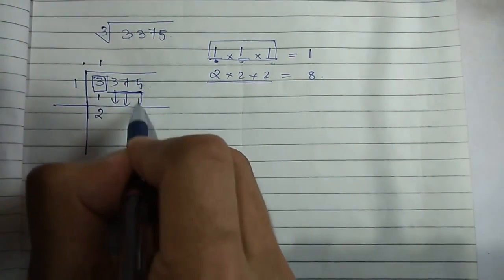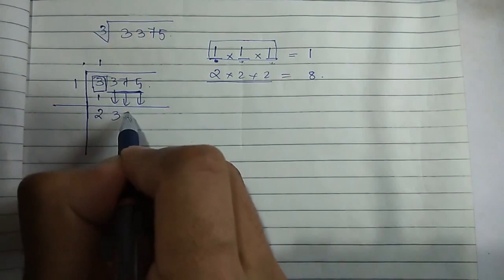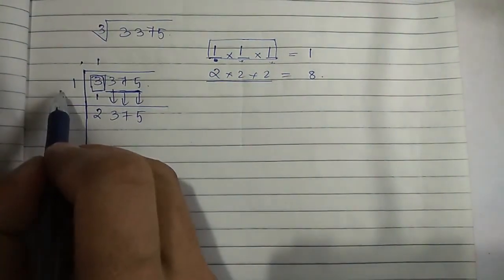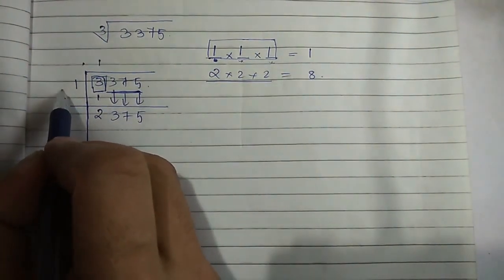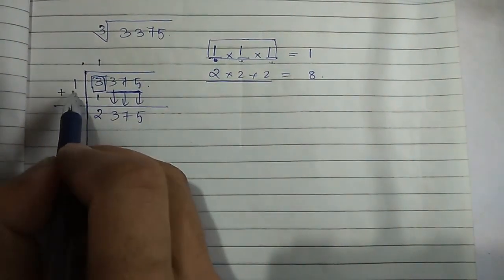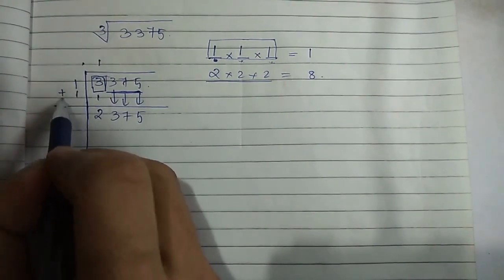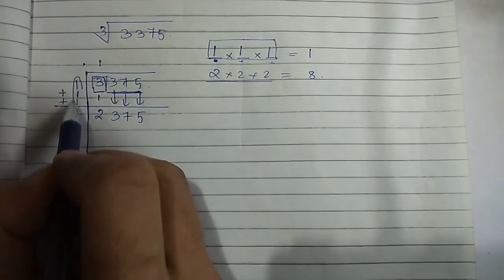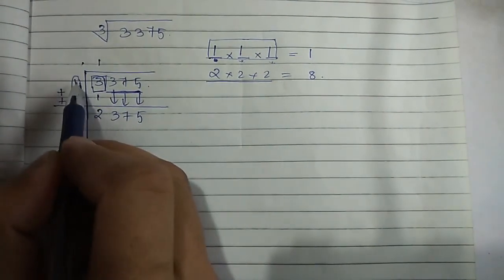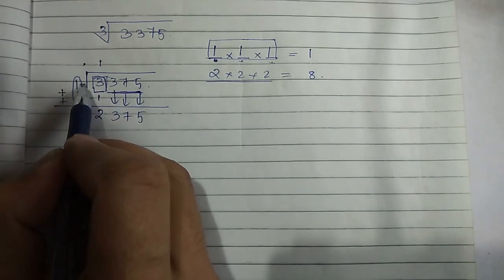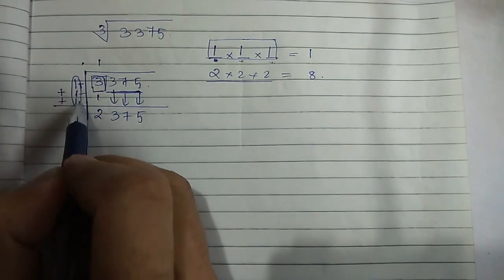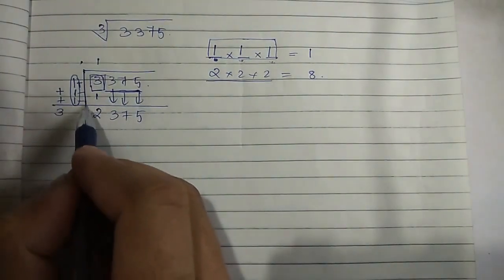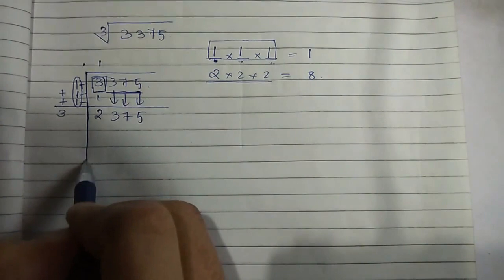1×1 is 1; 3 minus 1 is 2. In the next step, we bring down all three remaining digits together: 3, 7, 5. We also add the quotient digit three times: 1+1+1 equals 3.